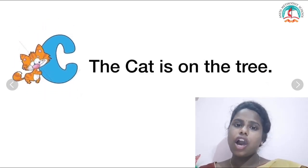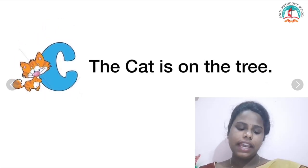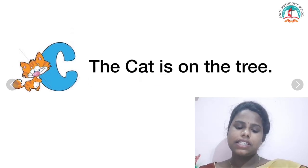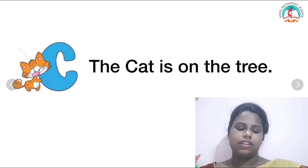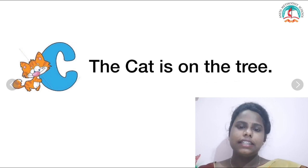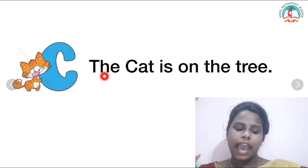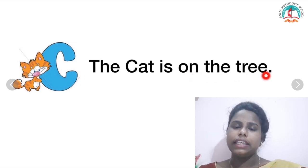C for cat. Shall we read it? The cat is on the tree. The cat is sitting on the tree — sitting or standing, it is on the tree. Shall we read it again? The cat is on the tree.